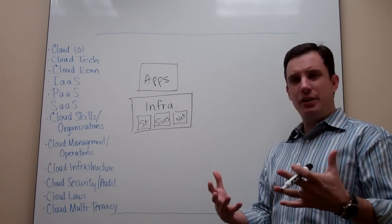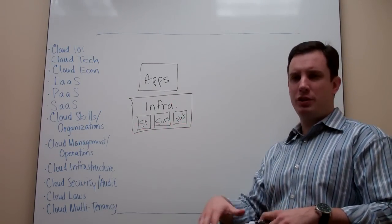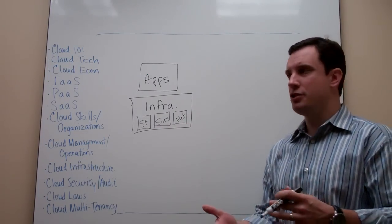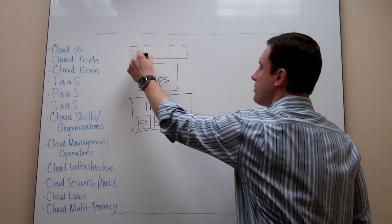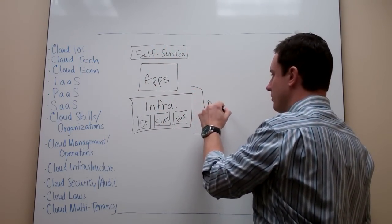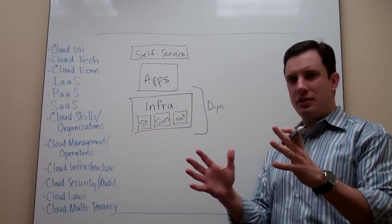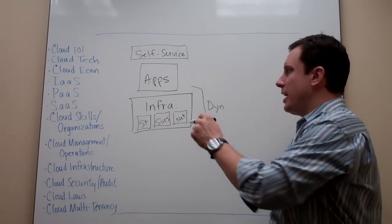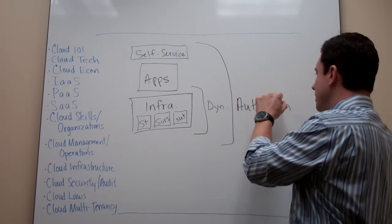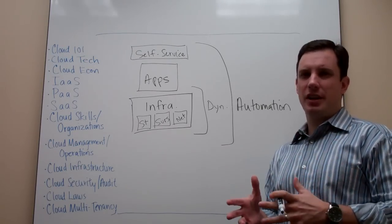As an end user or business, you're able to consume these on a self-service basis — no IT procurement, no business justification. You simply went to a website, signed up, and began using the application. That self-service model was built in. Resources were dynamic: they could expand when demand was high and contract when demand was lower. Great levels of automation were built into the application, the infrastructure, and the overall business delivering software as a service — really the first incarnation of what people thought of as cloud computing.